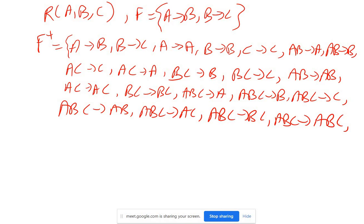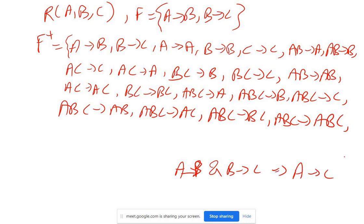Now, looking at the functional dependencies A→B and B→C, recall the transitivity axiom: if A→B and B→C, then we can derive A→C. So by transitivity, since A→B is there and B→C is there, we can get A→C.